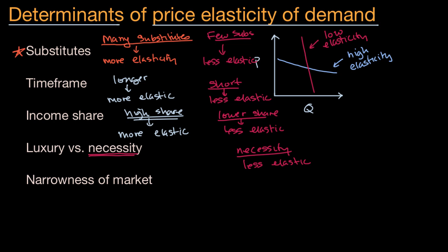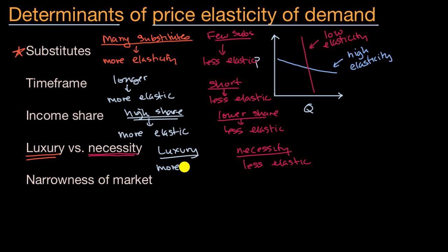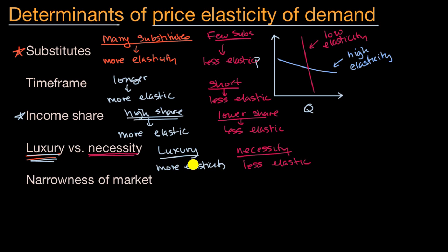But if something's a luxury — say gold tiaras — and the price of gold rises dramatically, a lot of people would say they don't need that gold tiara; it won't make a big difference in their life. So in general, luxuries are associated with more elasticity. Now there could be exceptions: if something is in the ultra-luxury category, maybe the price rise represents a low share of income for buyers, and maybe they feel there's no substitute. So it might not be as sensitive — but we're talking in broad generalities.